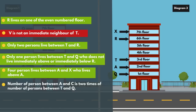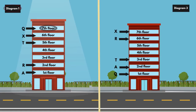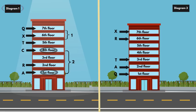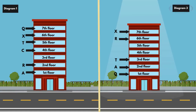Next statement: The number of persons between A and C is two times the number of persons between T and Q. In Diagram 1, Q lives on the 7th floor and T lives on the 5th floor — only 1 person between T and Q — so 2 persons must be between A and C. A lives on the 1st floor, so place C on the 4th floor. In Diagram 3, Q lives on the 1st floor and T lives on the 3rd floor — only 1 person between T and Q — so 2 persons must be between A and C. A lives on the 2nd floor, so place C on the 5th floor.